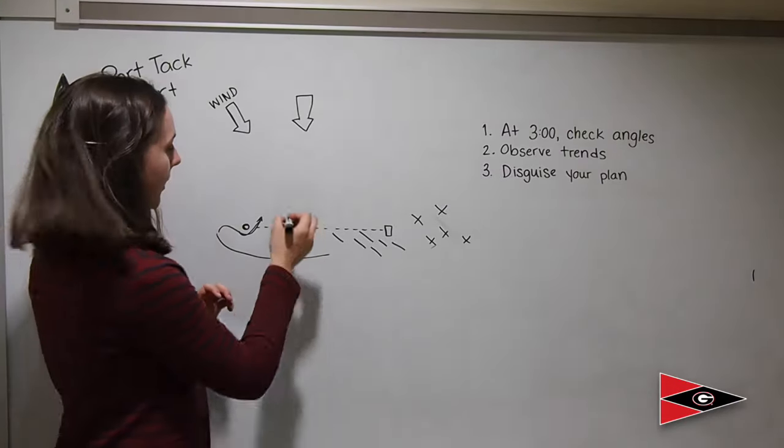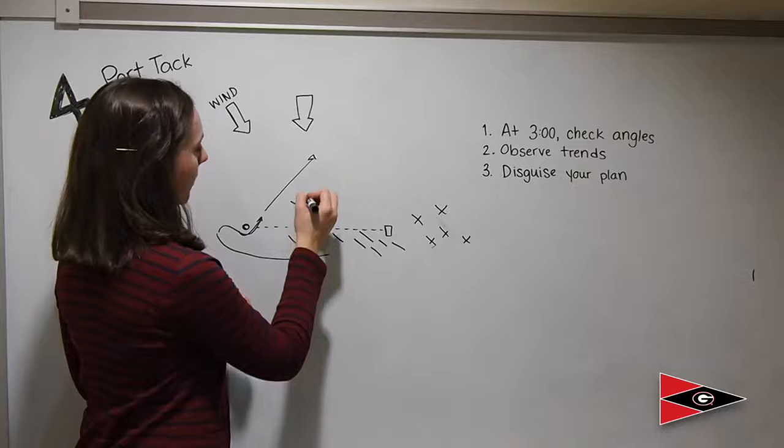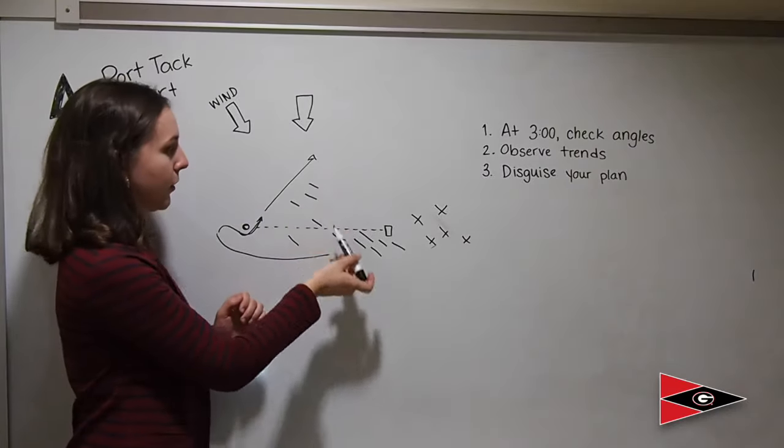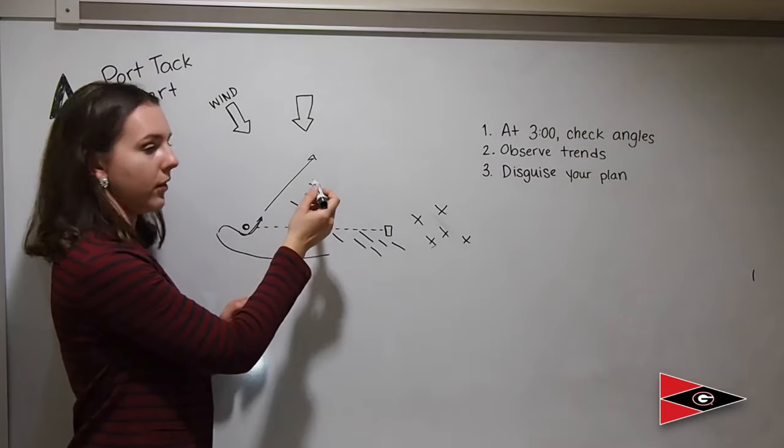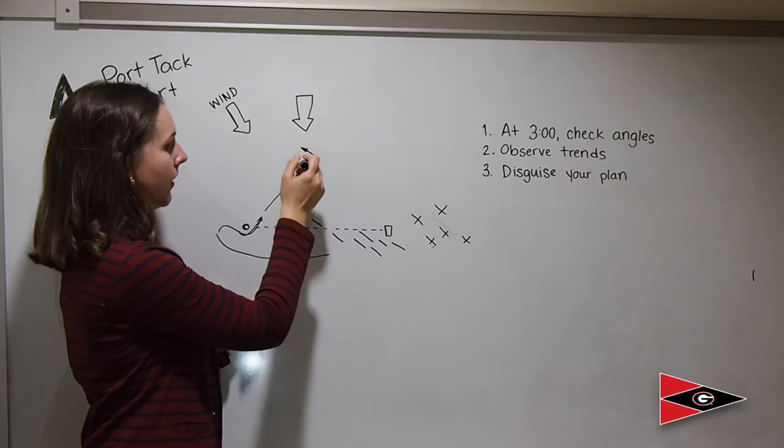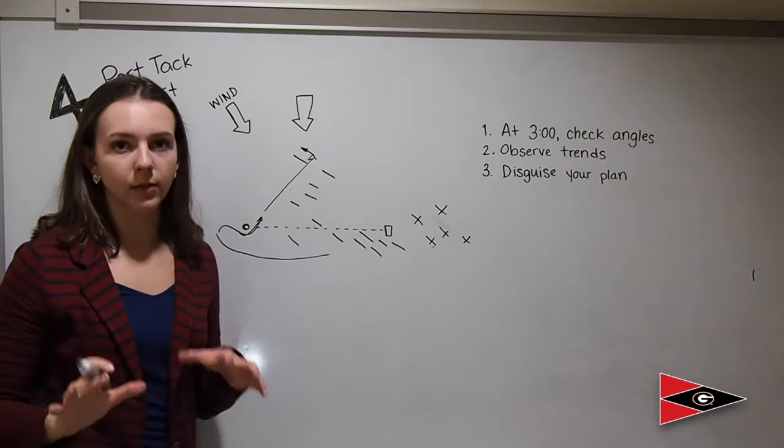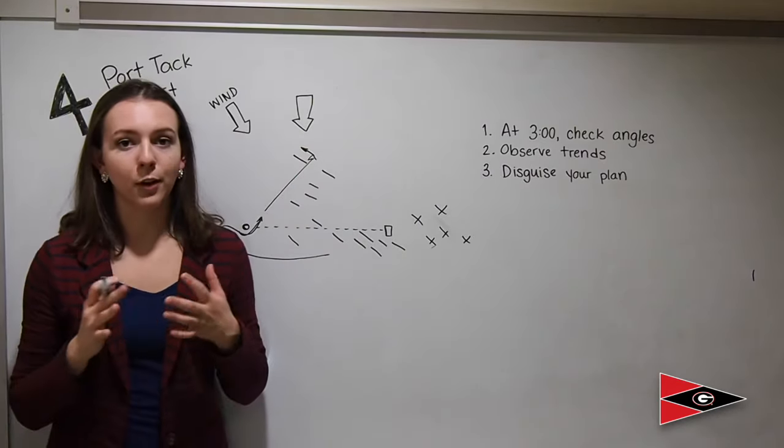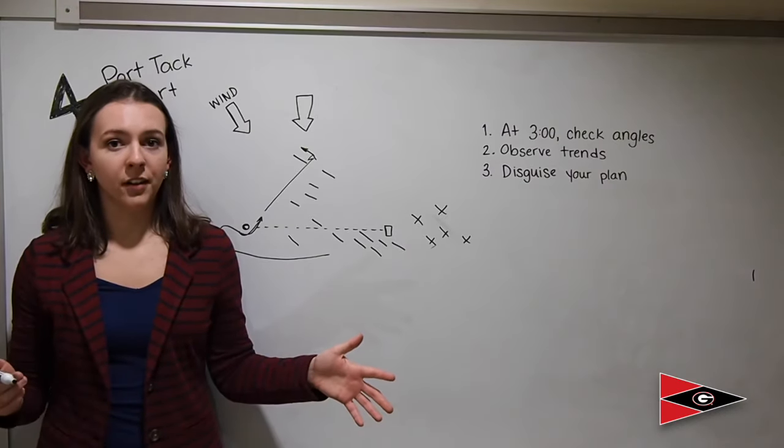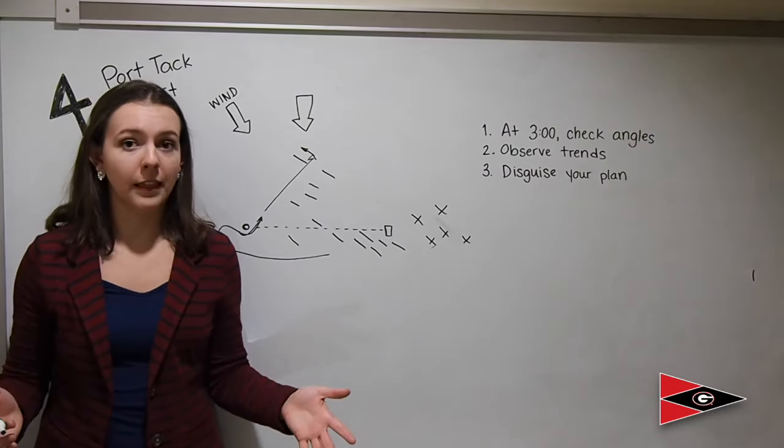The way this is beneficial is if you get on top of everyone else and they're all coming on starboard tack in this direction, as soon as you get on top of the highest boat you can tack over and then you are automatically controlling the fleet. What that means is the entire fleet is underneath you and you are in a great position to win if you don't mess anything up.